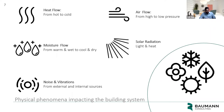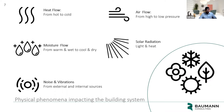Now that we have the idea of a building as a system, we want to understand what physical phenomena impact these systems. There are really five main phenomena. We have heat flows, which always work from hot to cold. We have air flows, which always occur from high pressure to low pressure areas. We have moisture flows, which always occur from warm and wet to cool and dry. We have solar radiation, which always provides light and heat. And we have noise and vibrations from external and internal sources. These phenomena can vary seasonally and change based on location in the country.